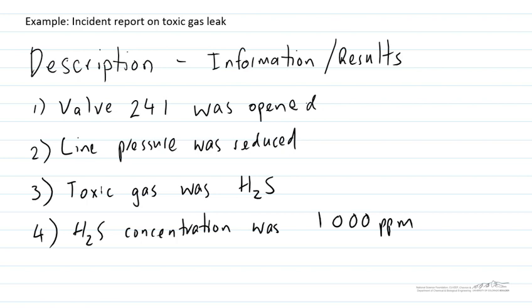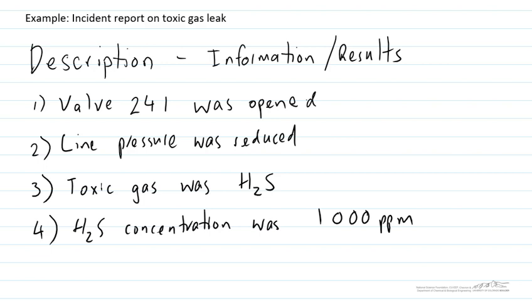So in our description we've come up with some information and results. We've identified that valve 241 was opened, the line pressure was reduced, the toxic gas was hydrogen sulfide and the hydrogen sulfide concentration was a thousand parts per million. So we've provided this information and the next question someone reading our report would ask would be so what? What does this information mean? So that's when we move on to our analysis phase.